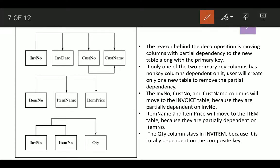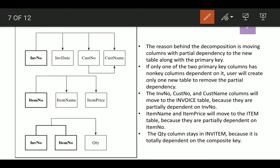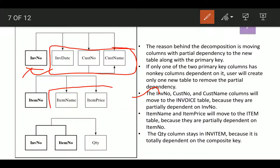This diagram depicts the tables in second normal form. The invoice number, customer number, and customer name columns move to the invoice number table because they depend on invoice number. Item name and item price depend on item number, and quantity depends on the composite primary key of invoice number and item number. This is the structure after converting from first normal form to second normal form.